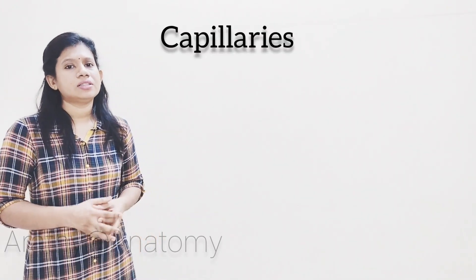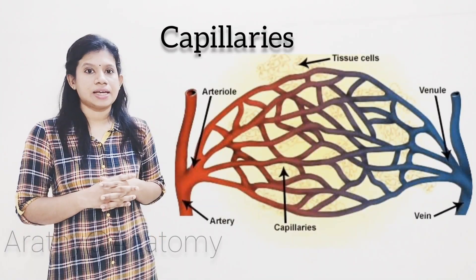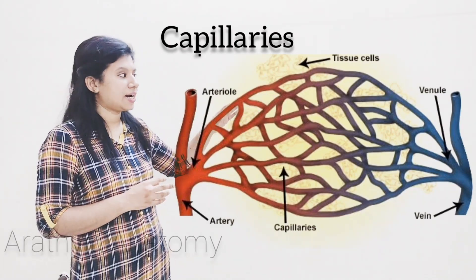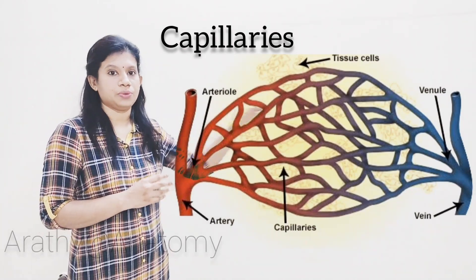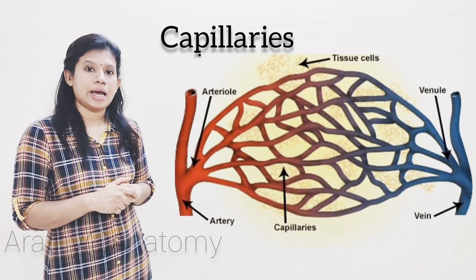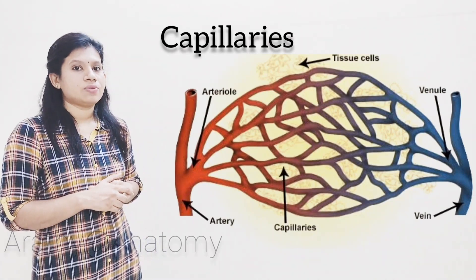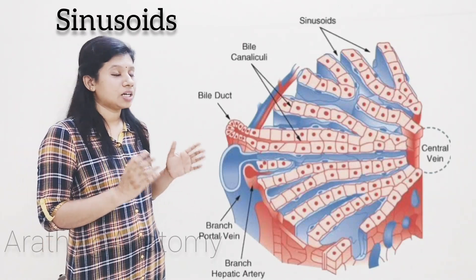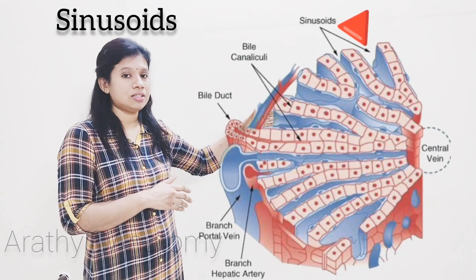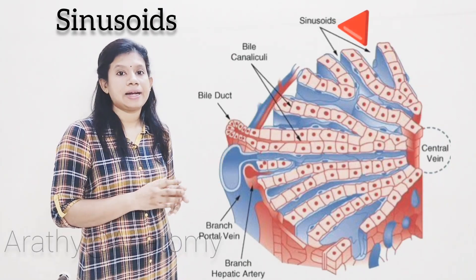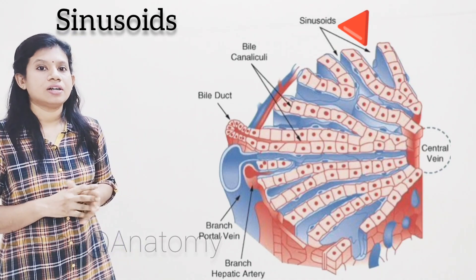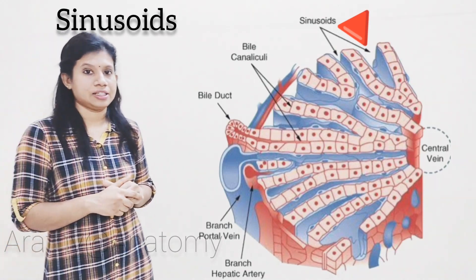The next one is called as capillaries. Capillaries are a microscopic network of vessels which connect arterioles to venules. The next one is called as sinusoid. Sinusoids are large irregular vascular spaces which are surrounded by the parenchyma of an organ — especially seen in the liver, adrenal gland, etc.